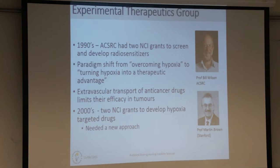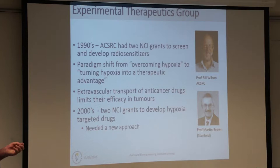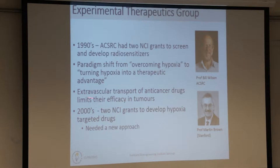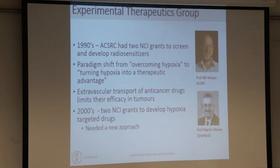Bill Wilson's group, in the 1990s, had two grants from the NCI in America to develop drugs which could radiosensitise tumours, or at least the hypoxic cells in tumours. During that time, there was a paradigm shift from wanting to radiosensitise the hypoxic cells to actually overcoming hypoxia by killing the hypoxic cells with drugs. However, these drugs tend to be limited by their transport from the blood vessel to the hypoxic cells most distant from the tumour capillaries.